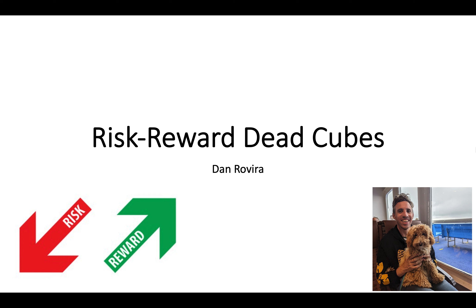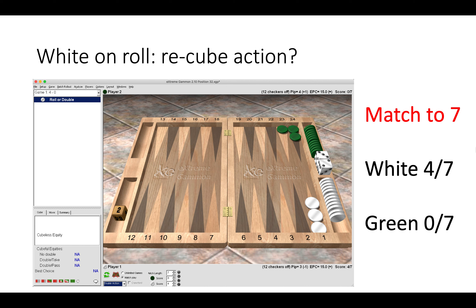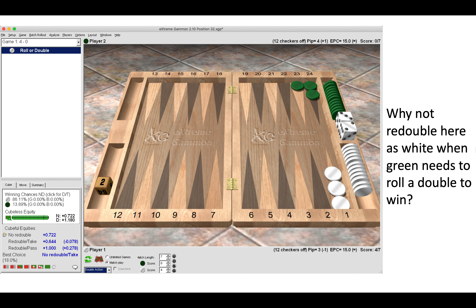Hello there and welcome back to my channel. In this short video I want to talk to you about risk-reward dead cubes. There will be some maths in this video but I'm going to try to keep it as straightforward and simple as possible. I'm going to show you this position from the recent UBC which actually decided the match. White is on roll in a match to seven — white is currently on four points, three away from winning, and green is on zero, seven points away. White owns the two cube and is deciding whether to recube or not.